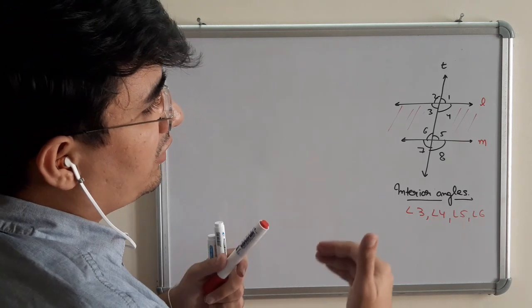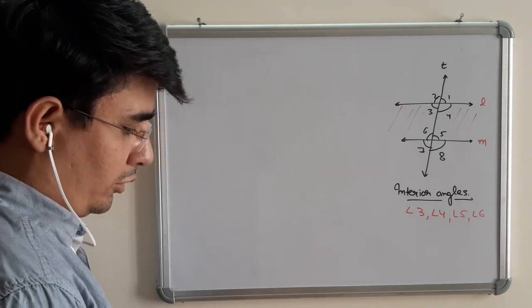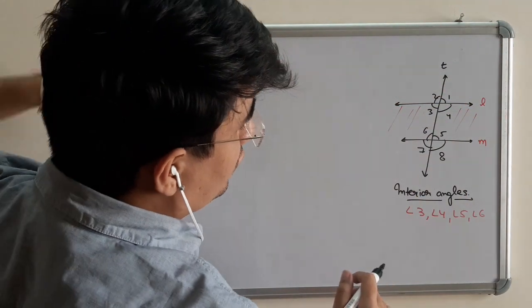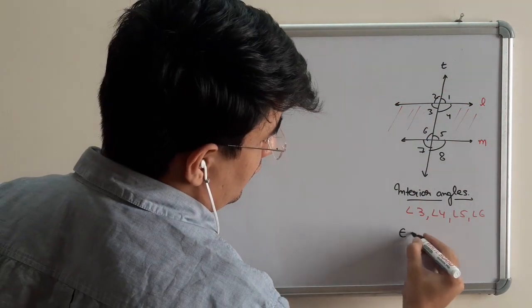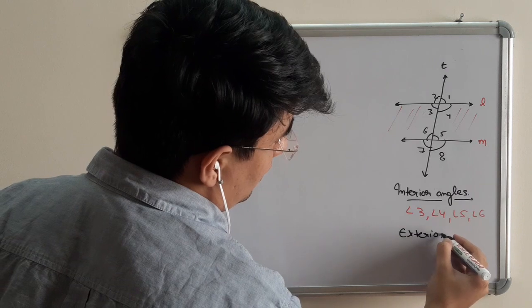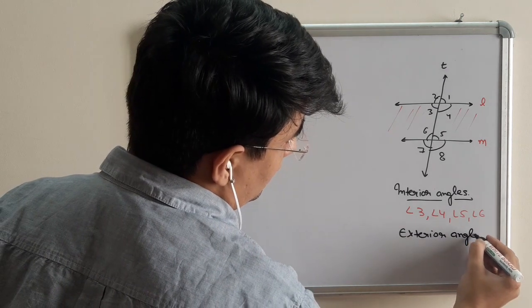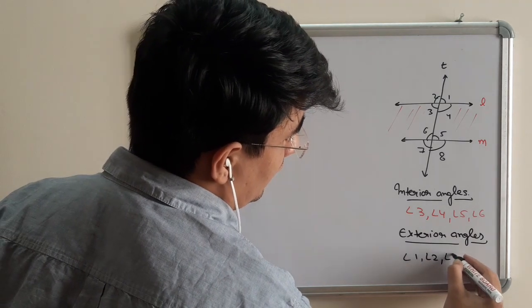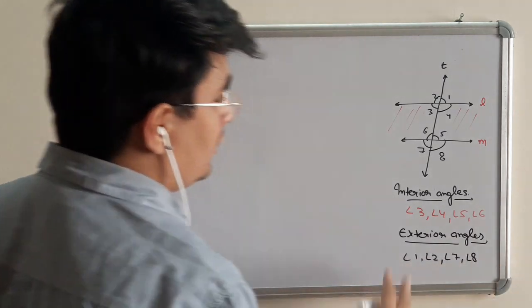The rest are exterior angles. So, hope you understand what you mean by interior and exterior. Exterior is outside these two lines. Exterior angles are angle 1, angle 2, angle 7, and angle 8. Okay.